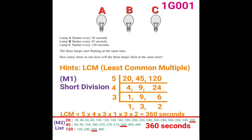Now do the division one by one. 20 divided by 5 is 4, so write 4 under the 20. 45 divided by 5 is 9, so write 9 under 45. And 120 divided by 5 is 24, so write 24 under 120. You can now see the three numbers 4, 9, and 24 in the second row of the short division.